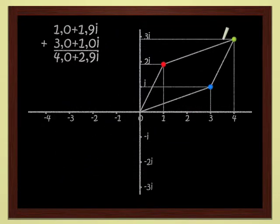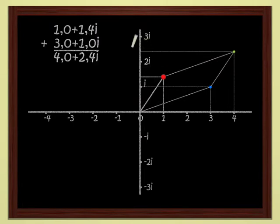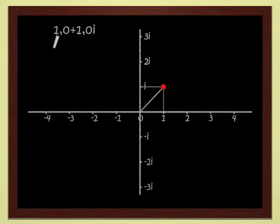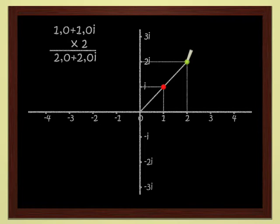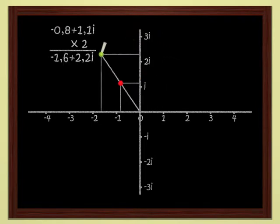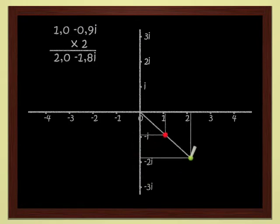Much more interestingly, these complex numbers can also be multiplied, just like real numbers. Let's see. We know how to multiply a complex number by 2, for instance. 2 times 1 plus 2i gives 2 plus 4i. Geometrically, multiplying by 2 is easy. It's just scaling up by a factor of 2. If we double the red point, we get the green point.